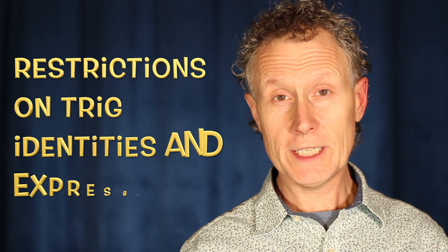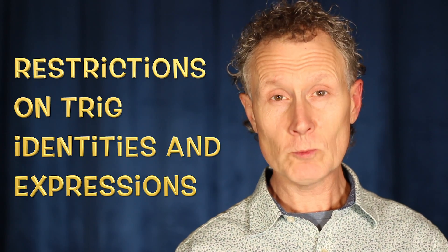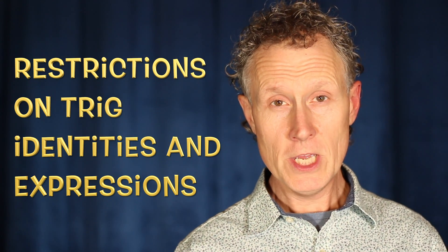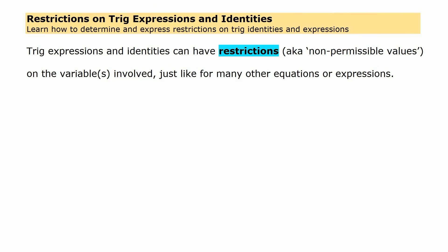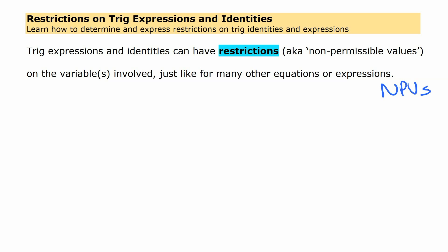Hey there. In this video, we are going to look at how you can determine and express restrictions on trig identities and expressions. Trig expressions and identities can have restrictions, or in other words, non-permissible values — NPVs for short — and those are on the variables that are involved.